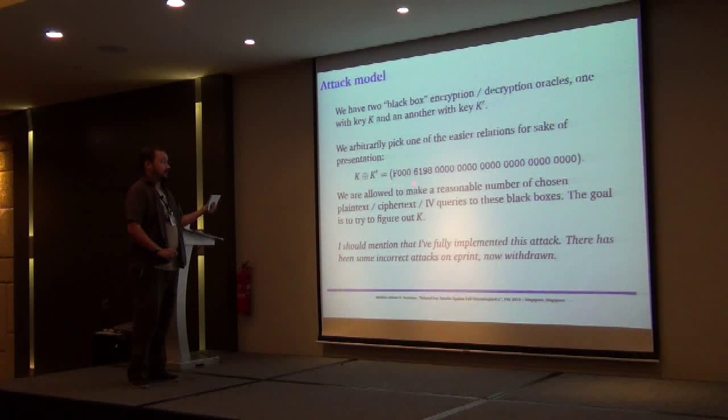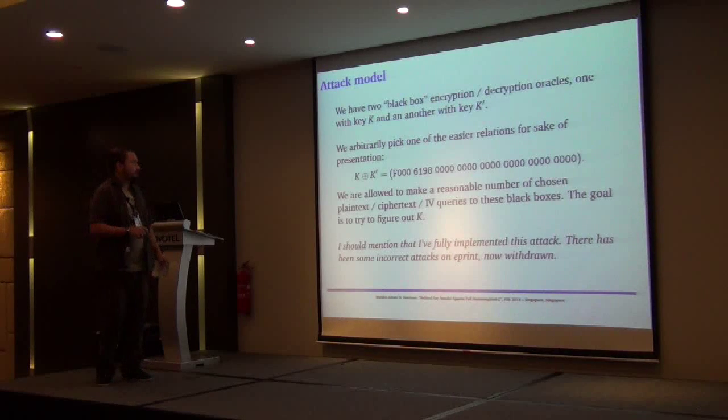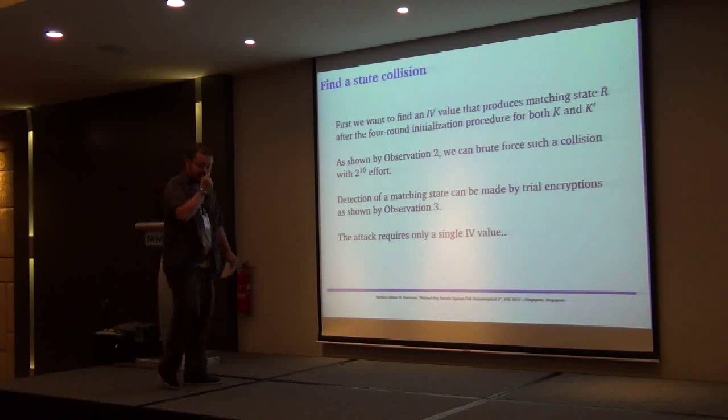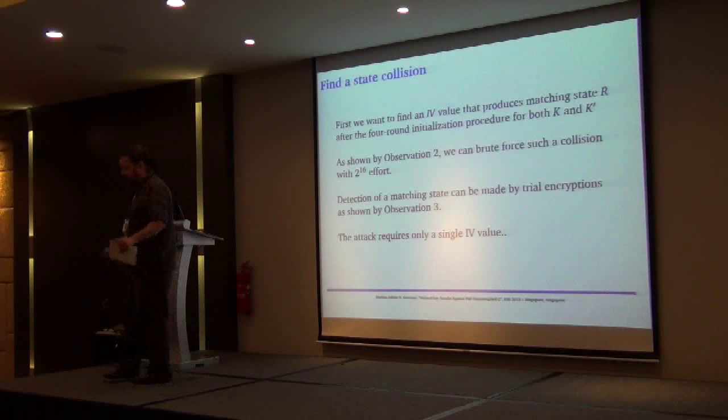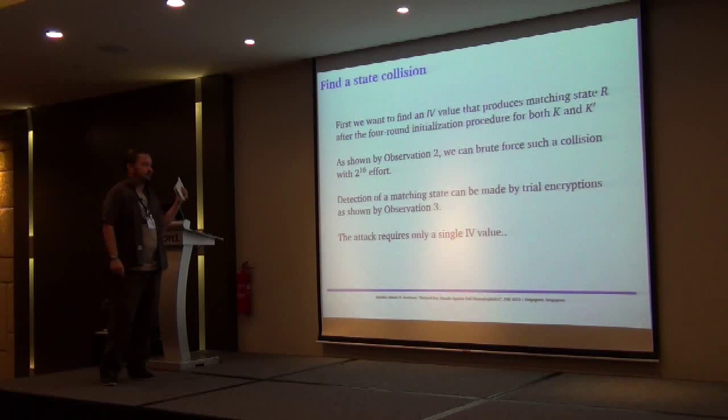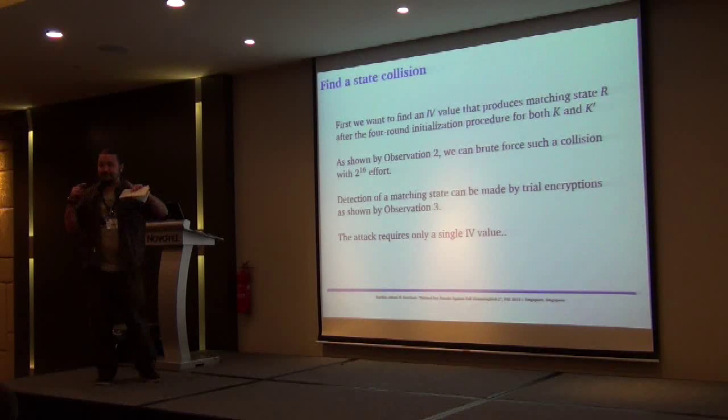We observed that there's very high probability, one over 16, that if the state matches—if we find an IV value which produces a collision in the state of the IV setup—then we have a very high probability that these two related keys will actually produce matching ciphertext. That's obviously quite easy to test because we are allowed this repeated nonce attack type of model. Coming to the actual key recovery, I just arbitrarily pick one key relation that I'm using here. We have two black box RFID tokens and we are issuing queries there, and they are related by this. Obviously the task is to figure out K.